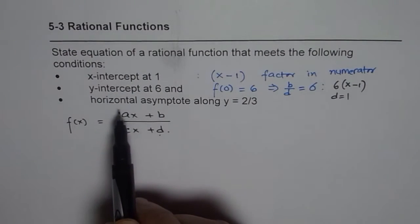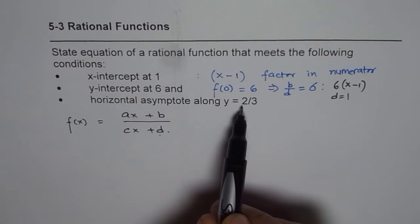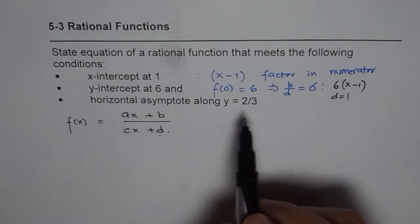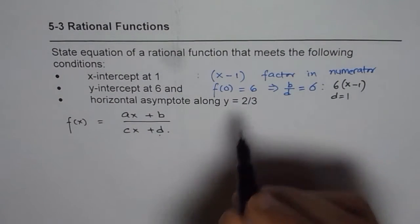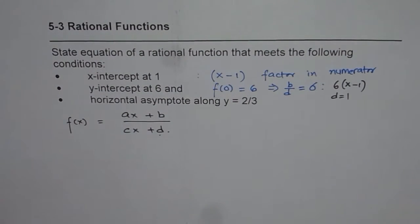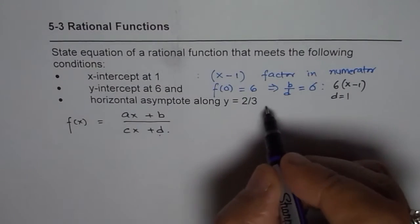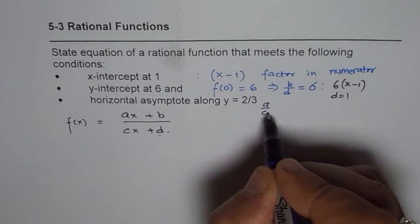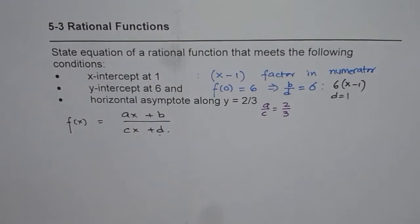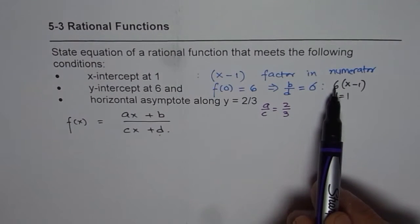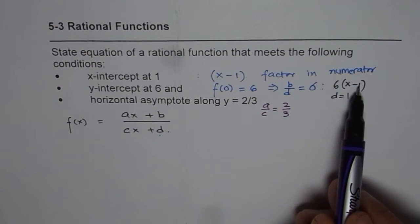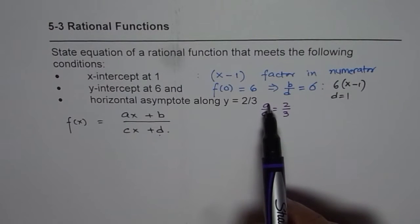Now the last condition is horizontal asymptote along y equals 2 over 3. That means a over c is 2 over 3.